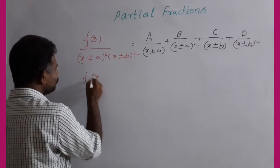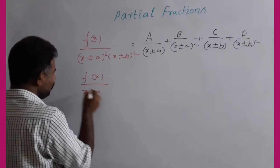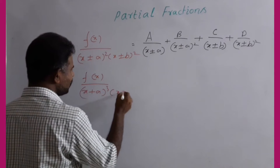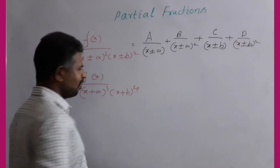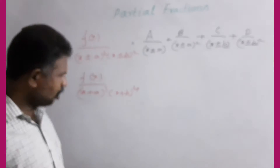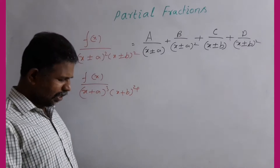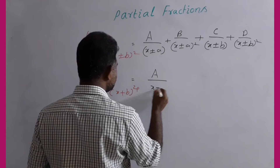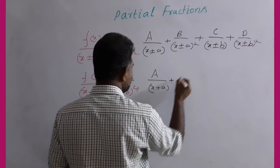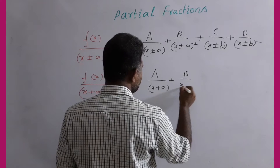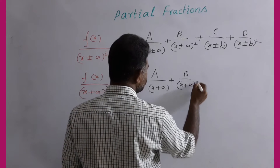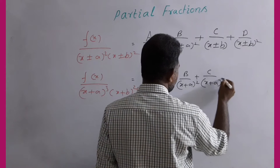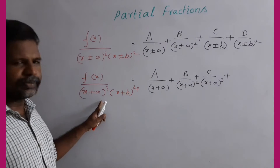For another f(x) example with a whole cube factor, the expansion includes terms: A by (x + a), B by (x + a)², and C by (x + a)³. This is the whole cube case explained.